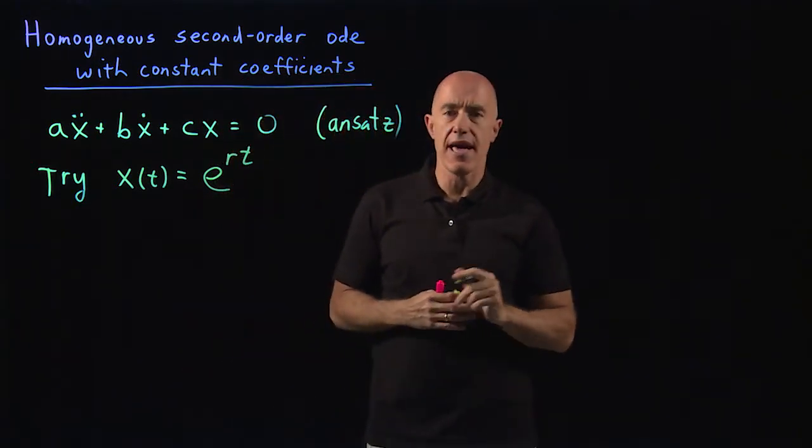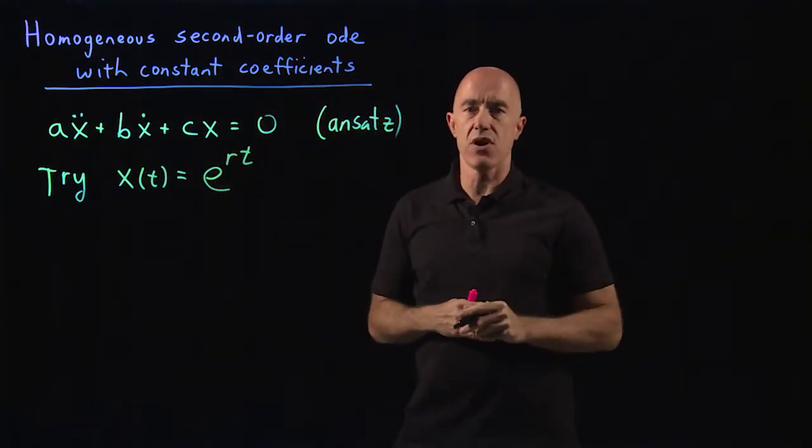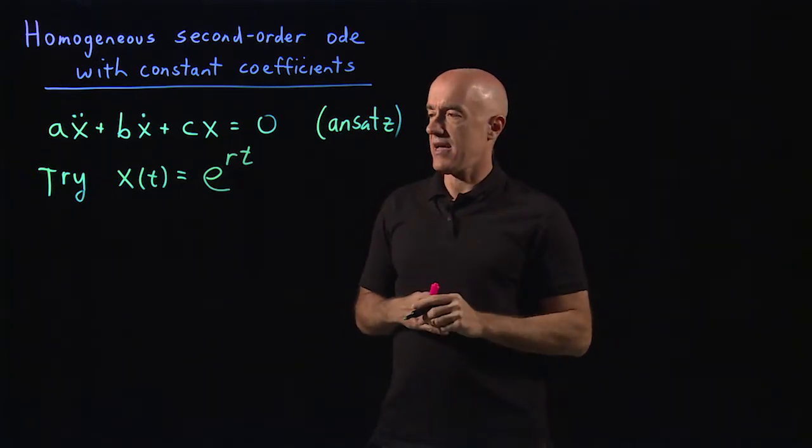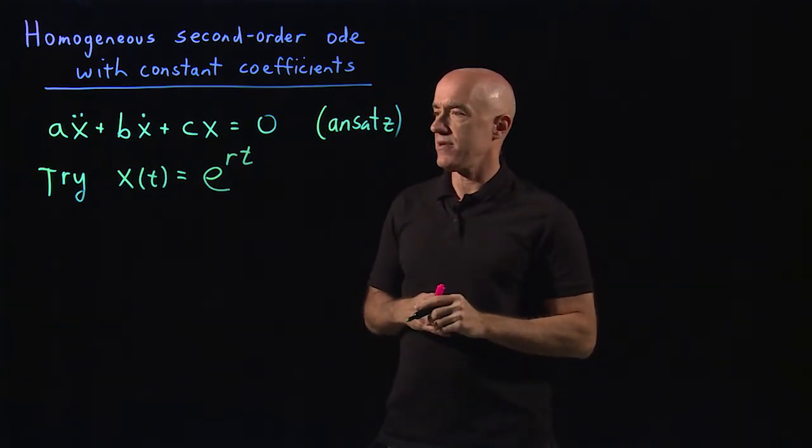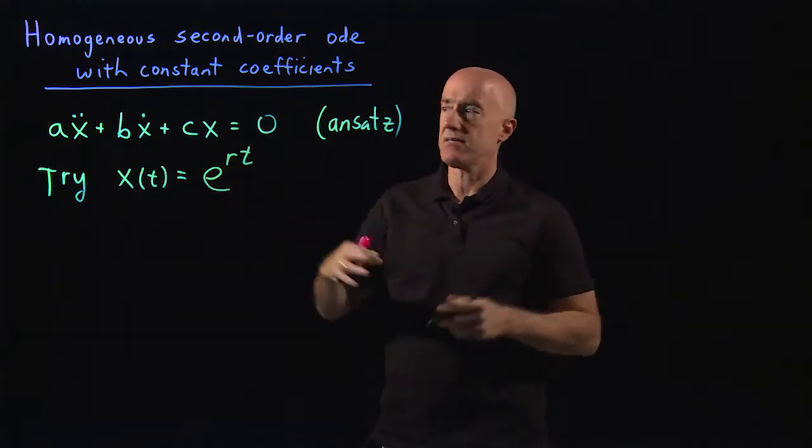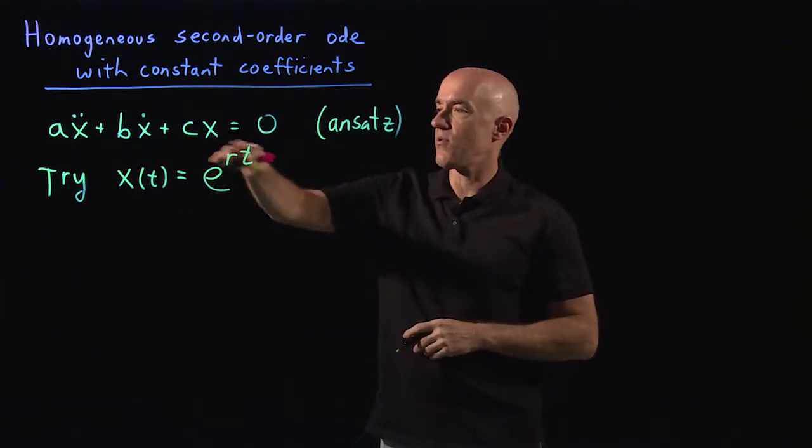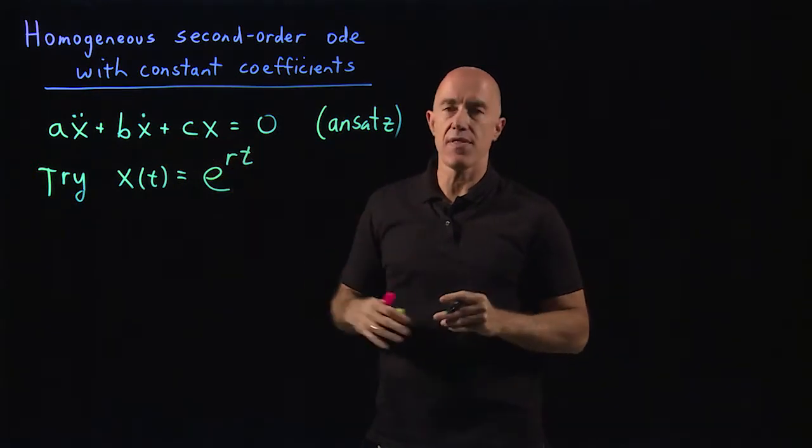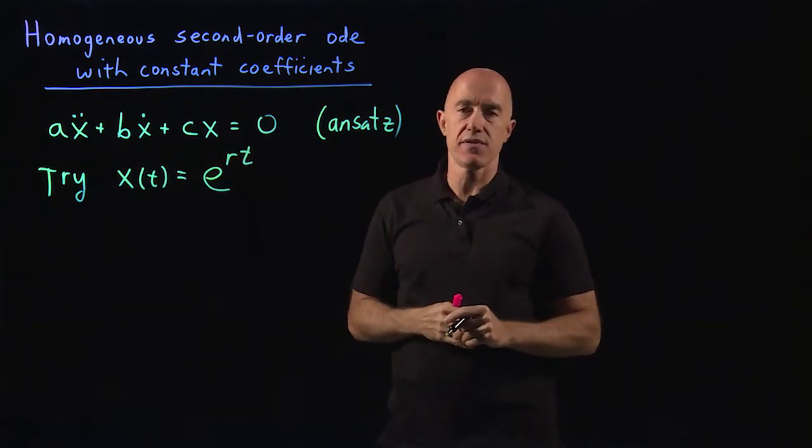So we try x of t equals e to the rt. R then is an unknown parameter. And we hope that by substituting this Ansatz into the differential equation, we'll end up with an algebraic equation for r.